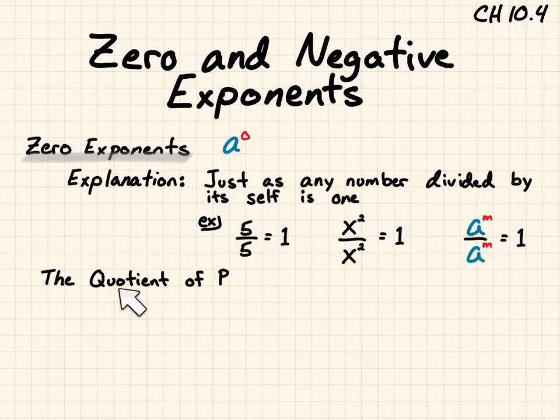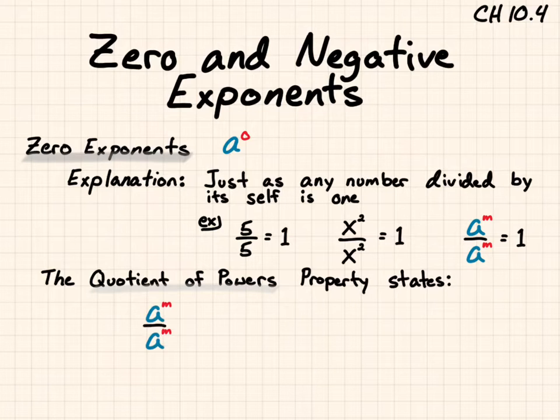And the quotient of powers property states that a to the m divided by a to the m is a to the m minus m, which would be a to the zero. Because m minus m, any number minus itself equals zero.